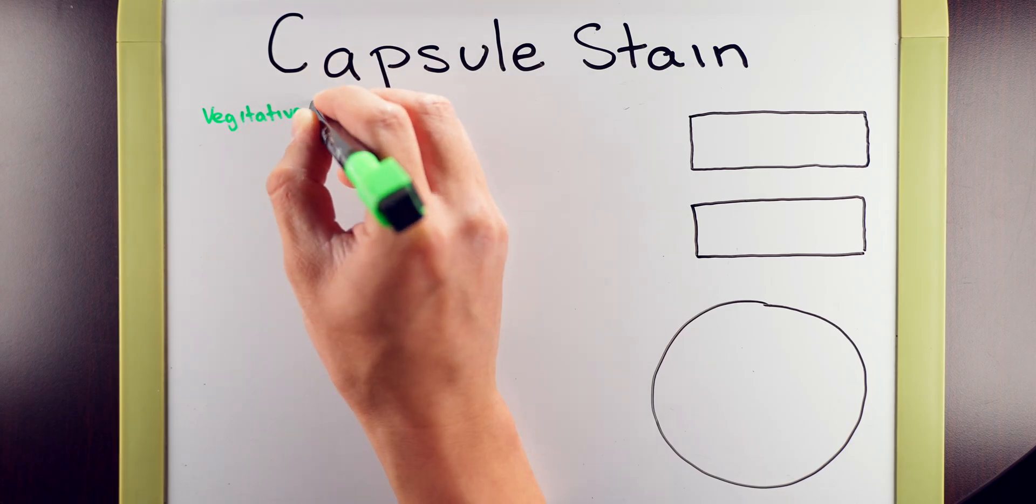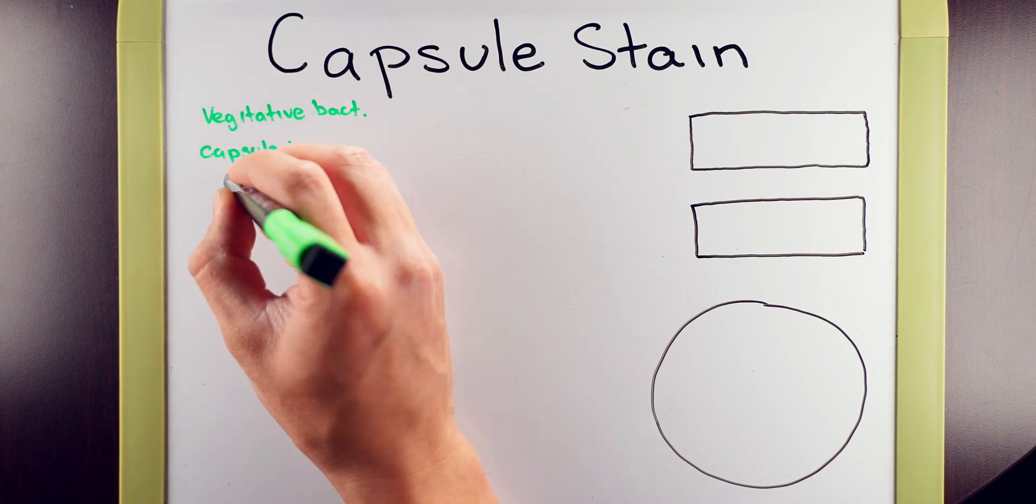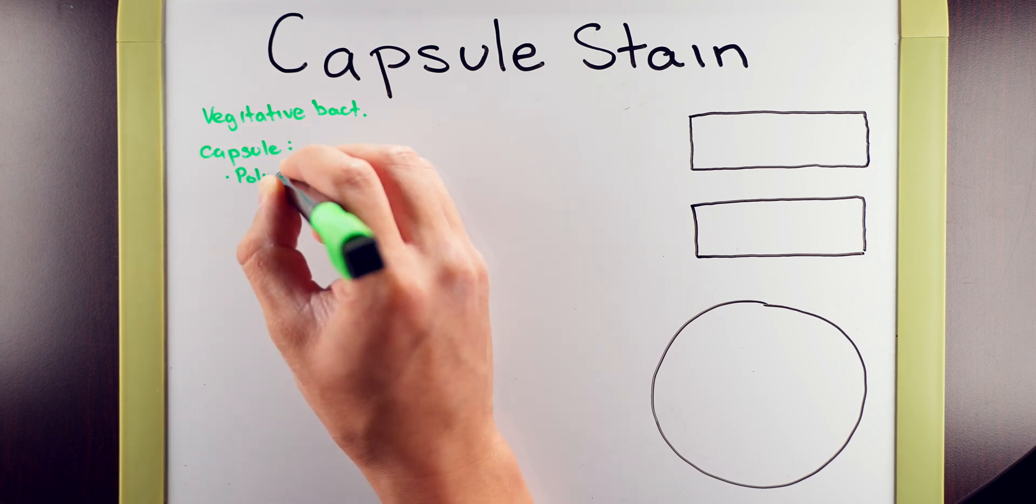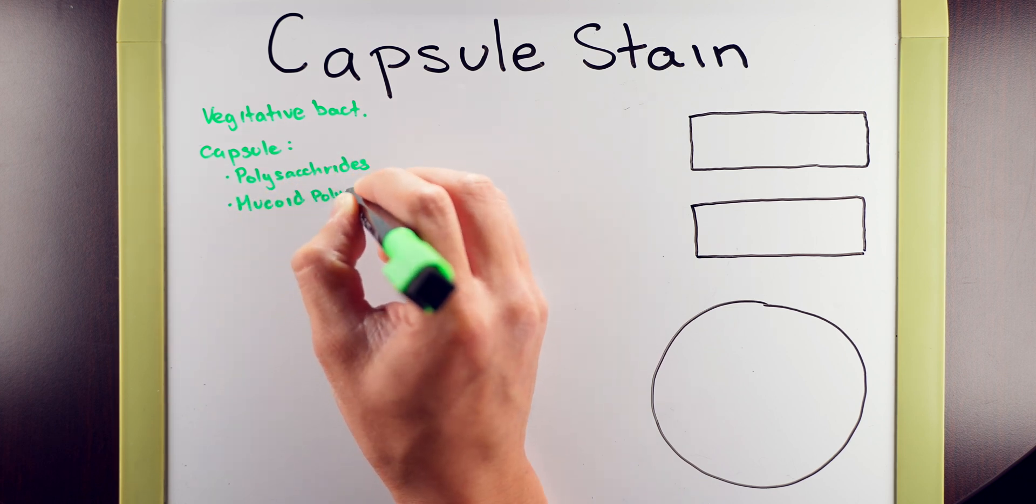Your capsule stain is meant to identify bacteria that are in a vegetative state surrounded by a capsule. The capsule is made of polysaccharides, mucoid polysaccharides, or as well as polypeptides.